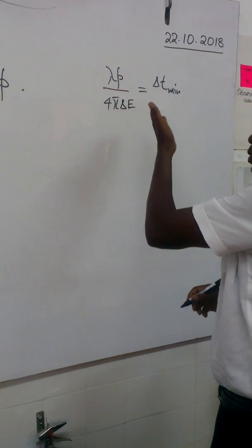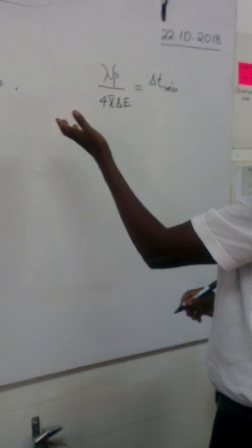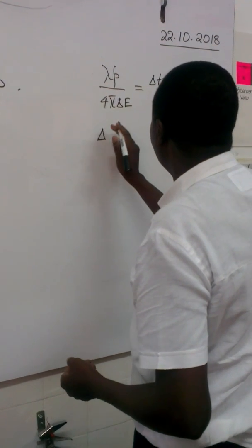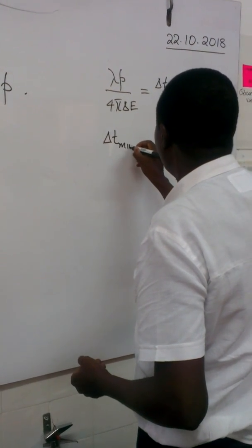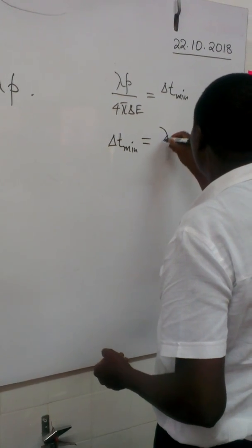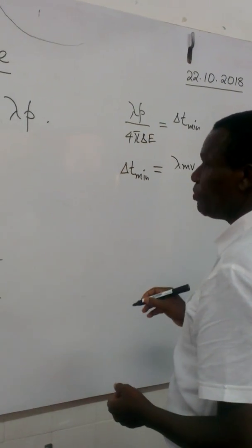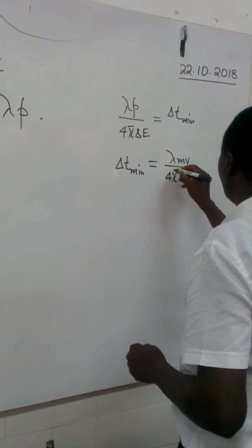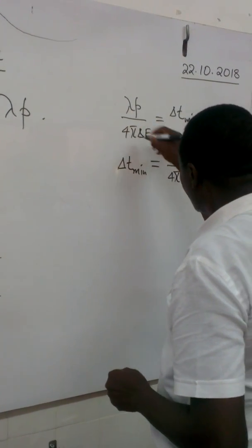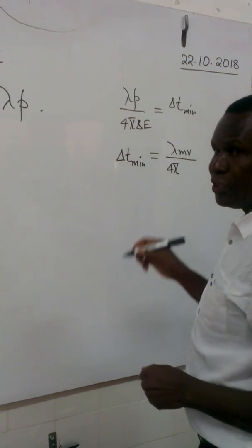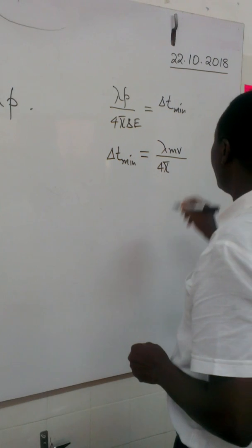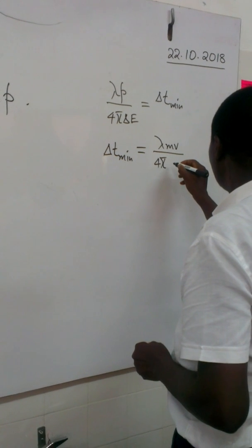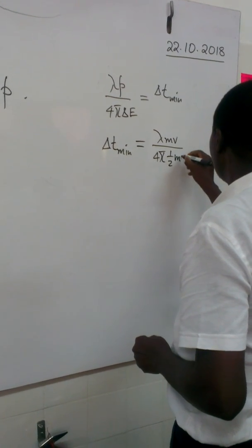Since this entity — the uncertainty in time — has a wavelength and momentum, it must be moving. We know momentum p is equal to mv, so we have lambda mv. And since there is a change in energy and the entity is in motion, that change in energy must be kinetic energy: one half mv squared.